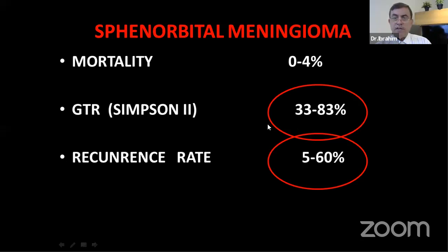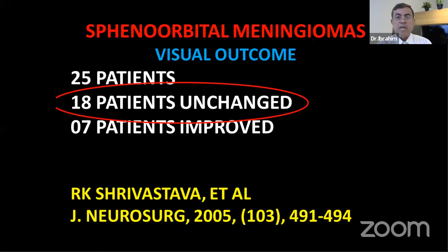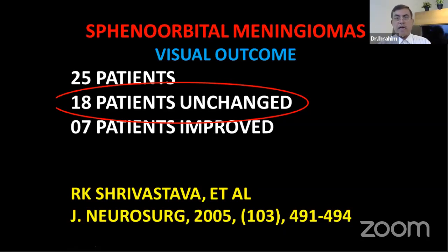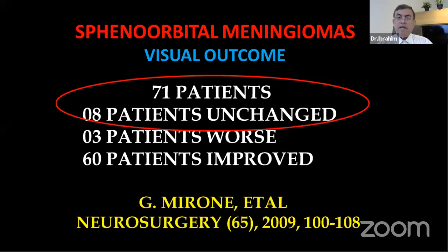Gross total resection rates in general publications range from 33 to 83 percent, and recurrence rates remain high. Since most patients present with visual deterioration, you may need to open the optic canal to decompress the nerve. Regarding visual outcomes: one paper from 2005 with 25 patients showed 18 patients unchanged. Another paper by Mirone 2009 with 71 patients showed eight unchanged but 60 patients improved — so outcomes are variable.